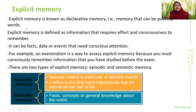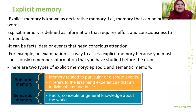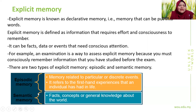Explicit memory, also known as declarative memory, refers to information that requires effort and consciousness to recall — you can put it into words. For example, frying an egg involves consciously thinking through the steps: you need a wok or pan, oil, stove, heat, and you crack the egg. Some scramble, some add onions or salt, some avoid it altogether. Explicit memory includes episodic memory (discrete personal events and first-hand experiences) and semantic memory (facts, concepts, and general knowledge about the world).